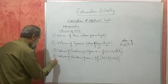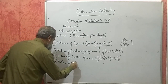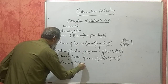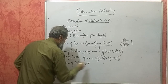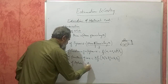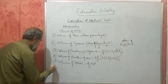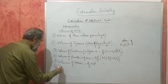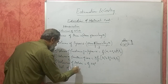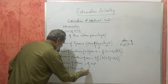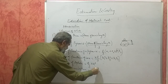Then, volume of a sphere — a sphere means a solid ball — will be (4/3) π R³. If it is a hemisphere — half a sphere — the volume will be (2/3) π R³.